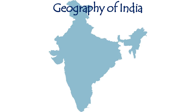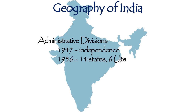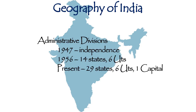Coming to the administrative divisions of India, at the time of independence in 1947, India was full of hundreds of small and unorganized states. By 1956, all these small states and lands were united to form large states, and at that time we had 14 states and 6 union territories. Since 1956, there have been many internal divisions forming new states, and now we have 29 states, 6 union territories, and 1 national capital territory.